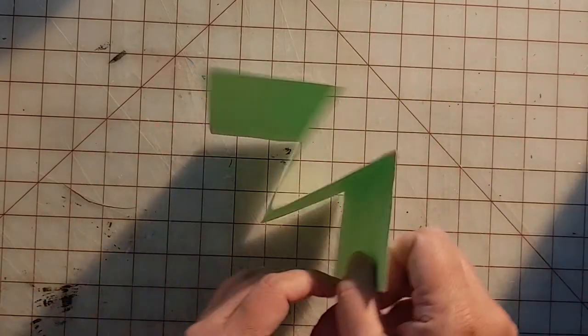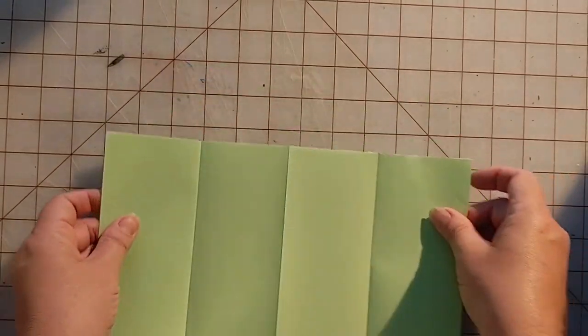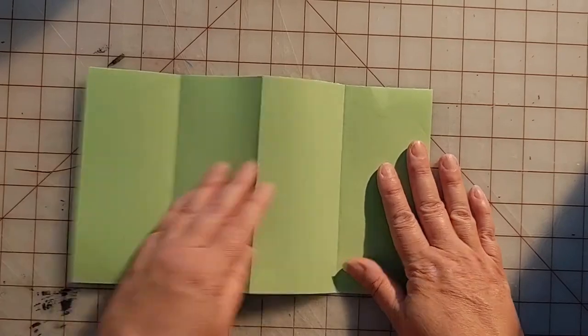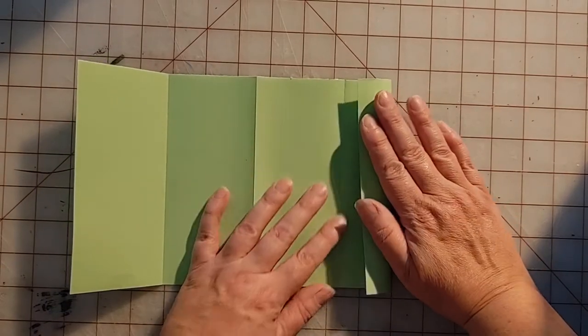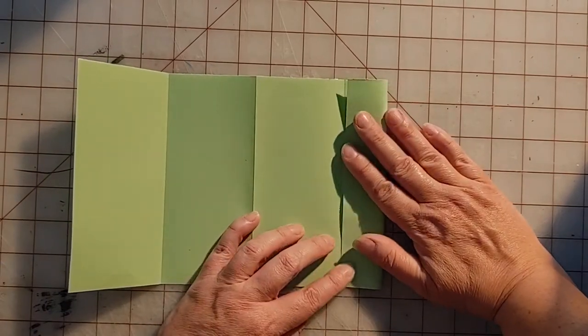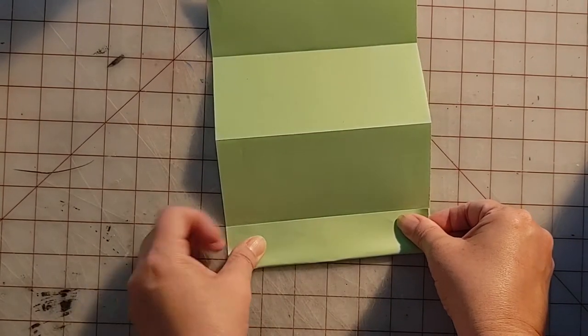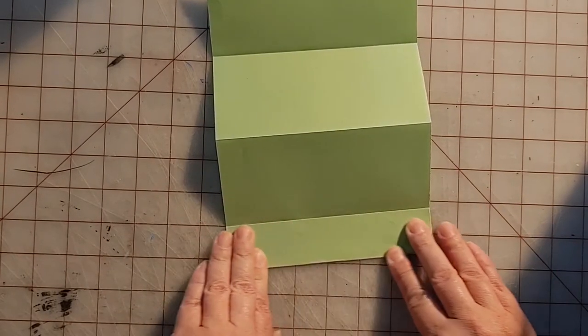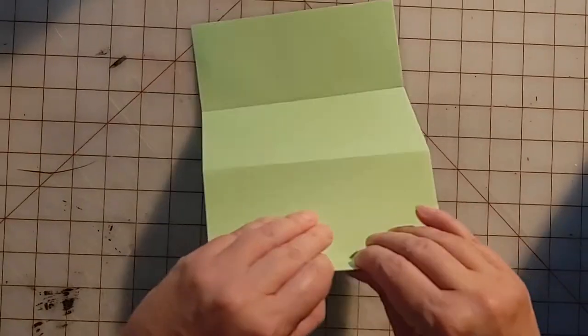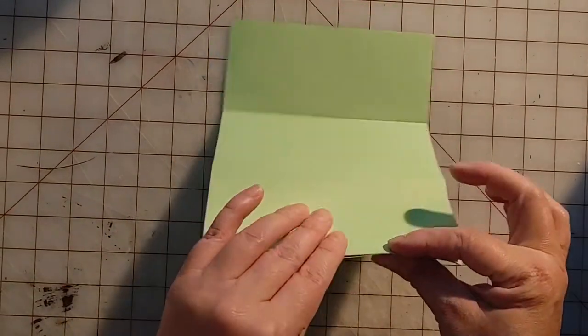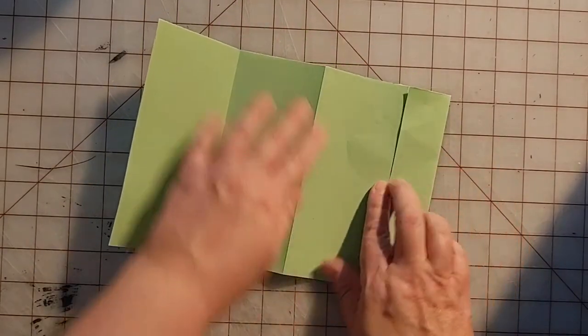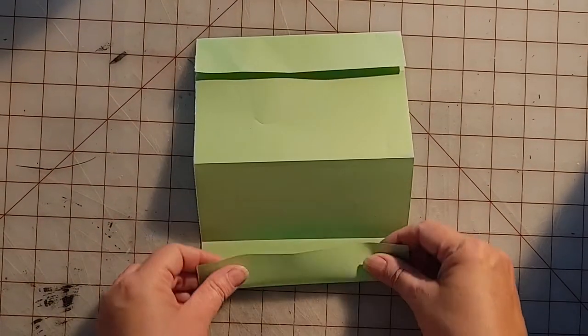It looks like a W or an M depending which way up you are. Now I'm going to open this out and I am going to fold this edge to my first fold. You can repeat that on the other side.